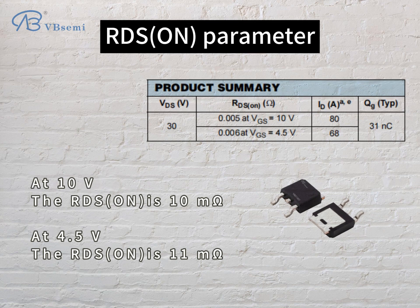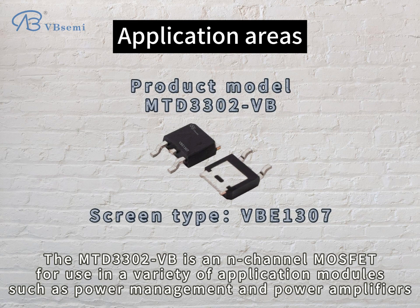RDS(on) parameter: at 10V, the RDS(on) is 10 milliohms; at 4.5V, the RDS(on) is 11 milliohms. The MTD3302VB is an n-channel MOSFET for use in a variety of application modules, such as power management and power amplifiers.